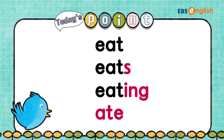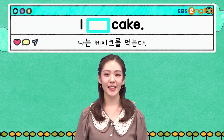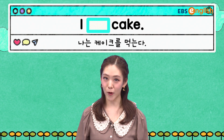Today's point입니다. Eat, eats, eating, ate. 먹다, 식사하다 라는 뜻의 동사 eat네요. 한 명, 그 혹은 그녀가 3인칭 단수일 때는 eats, 현재 진행일 때는 eating, 과거일 때는 ate에요.